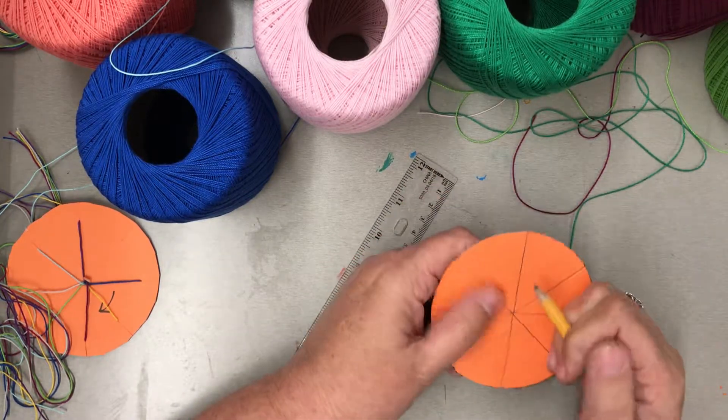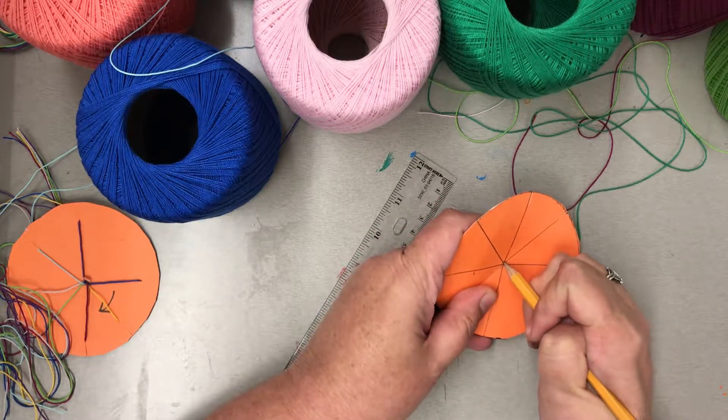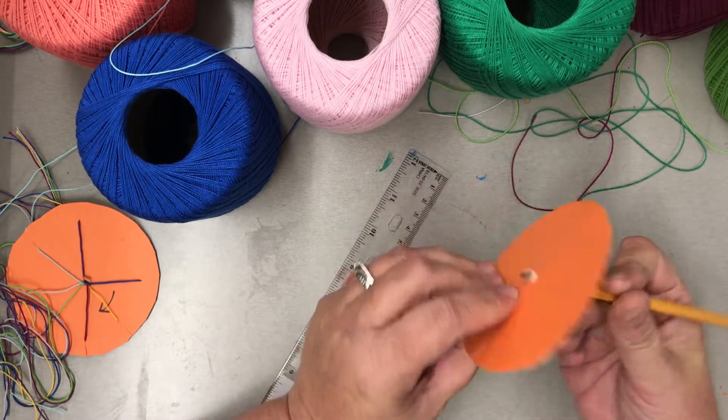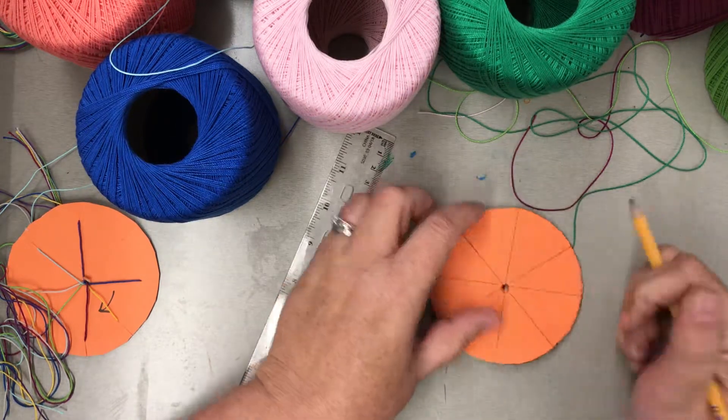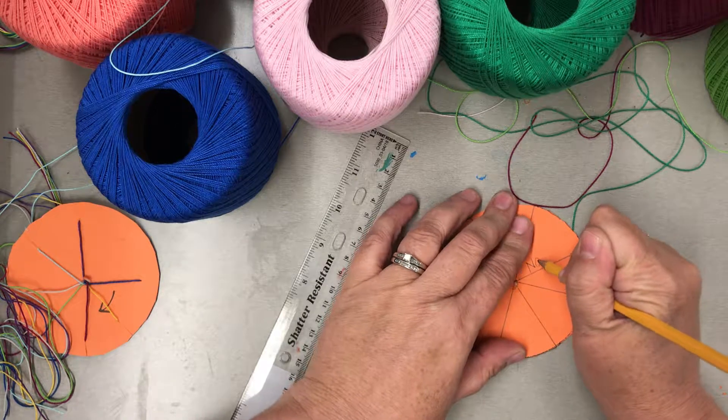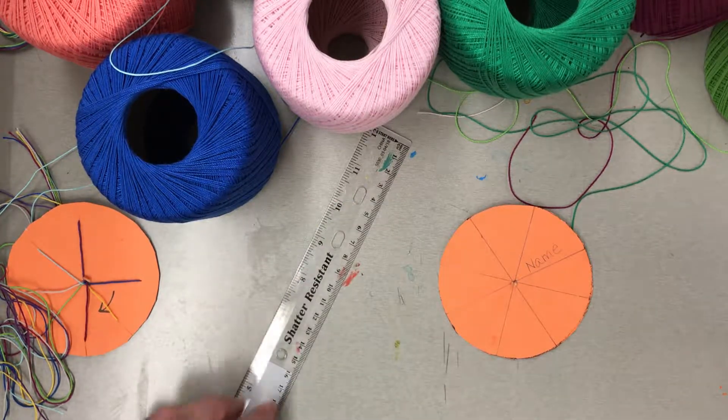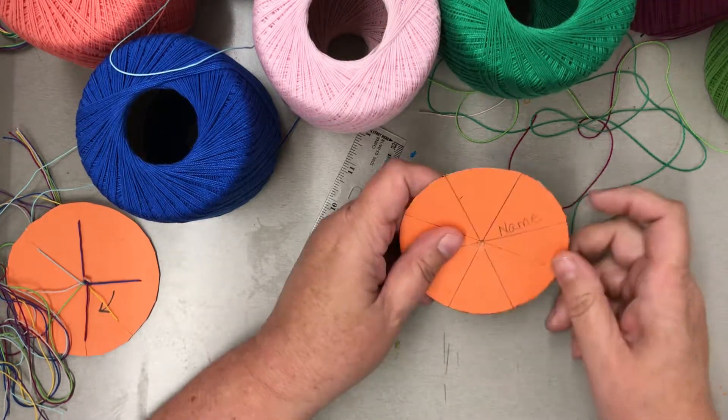The next thing you want to do is poke a hole in the very center of the loom. You don't want to shove your pencil all the way through, that will make your hole too big. And you want to write your name on your loom as soon as possible. Have Ziploc baggies for your students to store their supplies in.